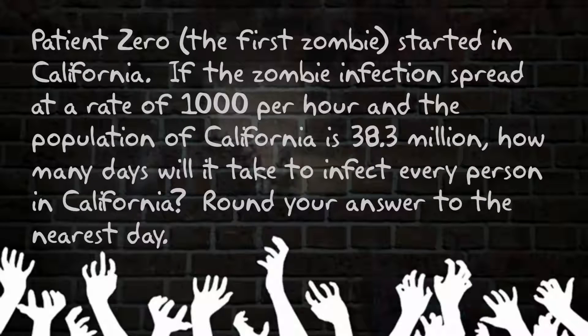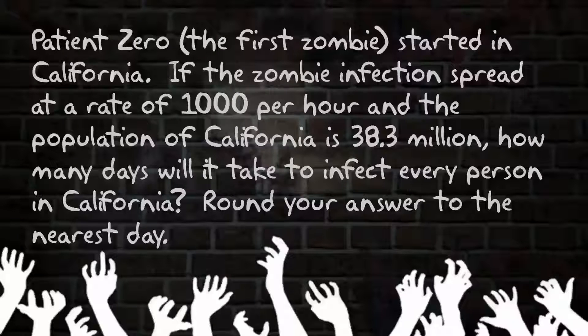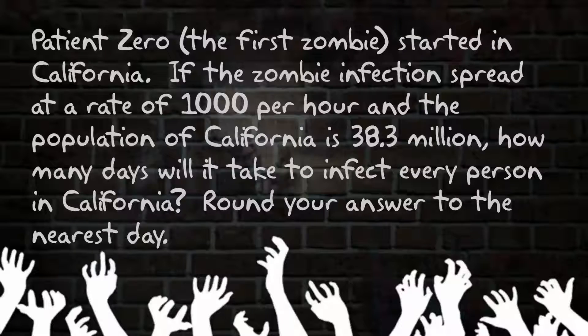Patient Zero, our first zombie, started in California. If the zombie infection spread at a rate of 1,000 people per hour and the population of California is 38.3 million, how many days will it take to infect every person in California? Round your answer to the nearest day.